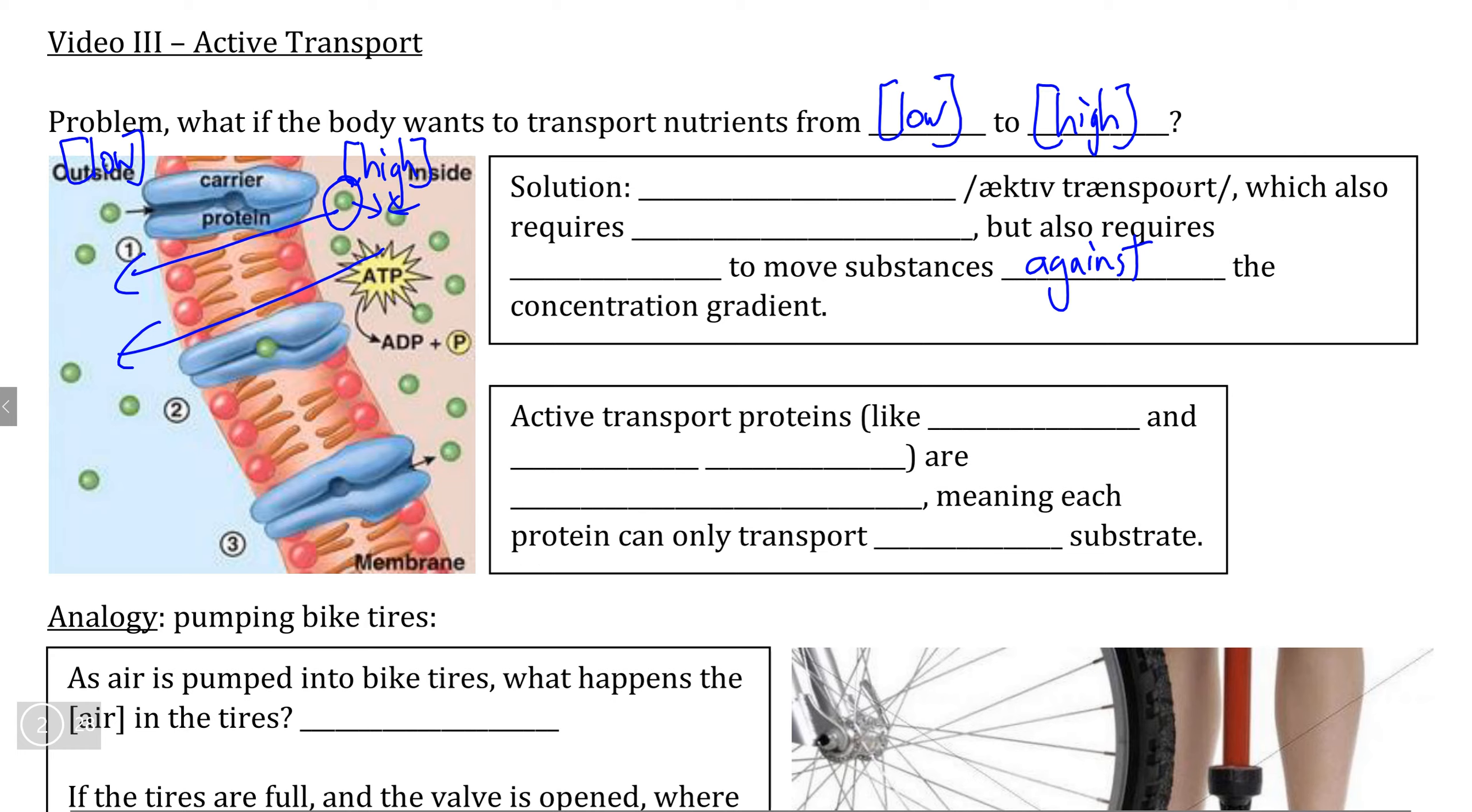Obviously, diffusion cannot be used to do this because diffusion takes place in the opposite direction. Therefore, this process of going against the concentration gradient is what we call active transport. The only two similarities that active transport shares with diffusion is that active transport requires a concentration gradient to be present.